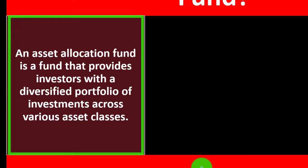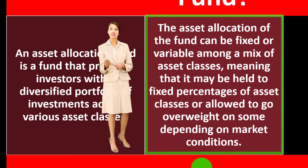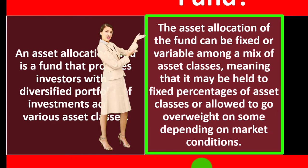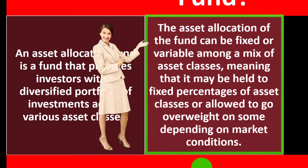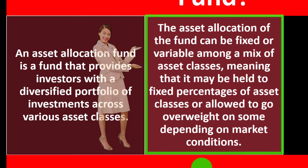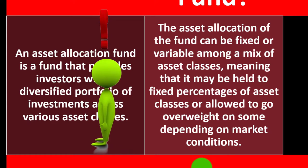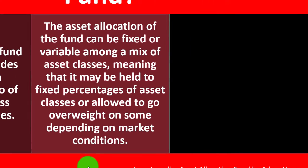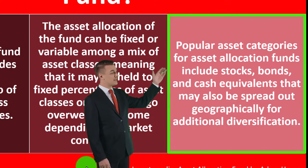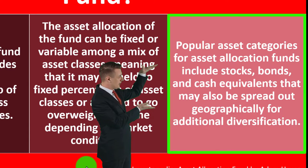An asset allocation fund provides investors with a diversified portfolio of investments across various asset classes. The asset allocation of the fund can be fixed or variable among a mix of asset classes — meaning it may be held to fixed percentages or allowed to go overweight on some depending on market conditions. The fund will have some way of weighting the investments, with some deviation allowed. Popular asset categories include stocks, bonds, and cash equivalents.